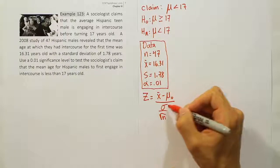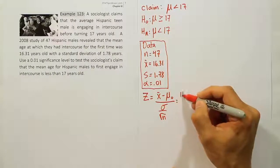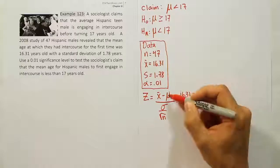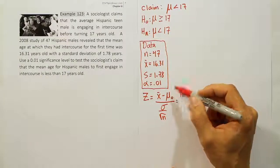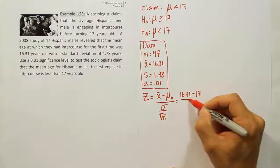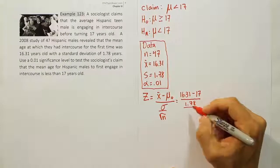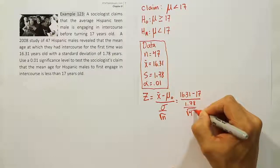We have the sample standard deviation. We'll use it as a substitute for the population value. The sample mean is 16.31. We'll subtract off the mean here from H0, which is 17, and then divide by the standard deviation and divide that by the square root of N, which is the square root of 47.